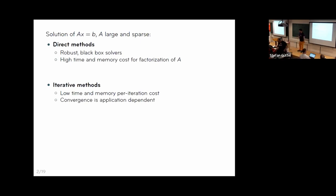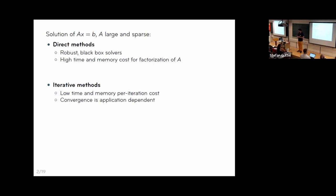There are two classes of methods for solving linear systems. Direct methods are very robust and accurate — they work basically as a black box — but they are also very expensive because they rely on factorizing the matrix. Iterative methods are much cheaper per iteration, but their convergence and total number of iterations are quite application-dependent. To summarize: direct methods need fast factorizations.